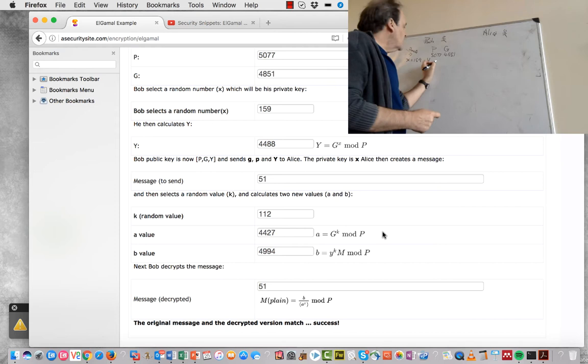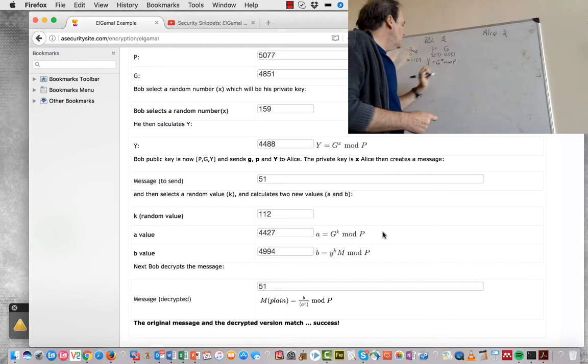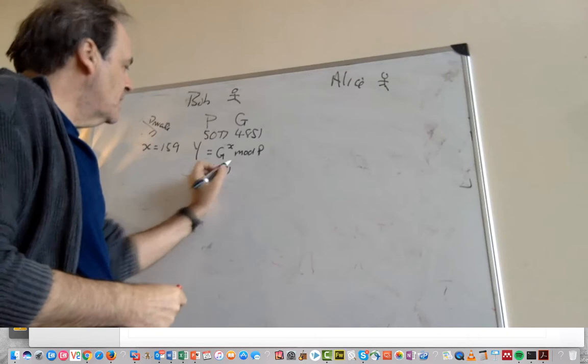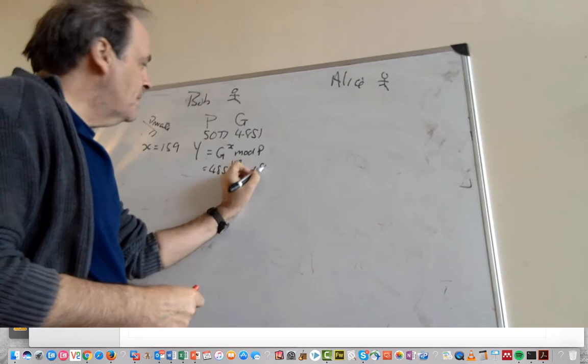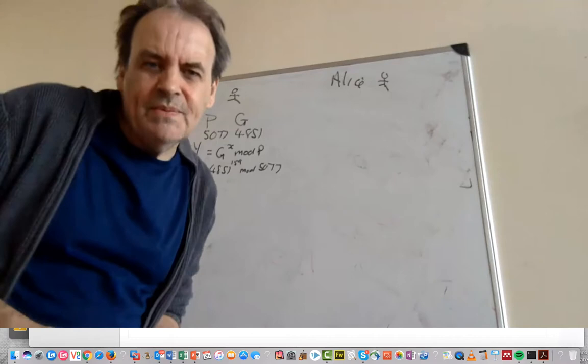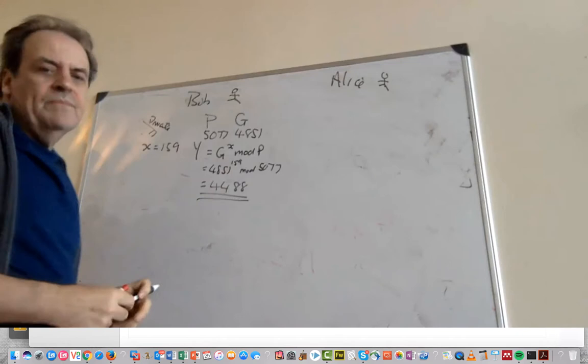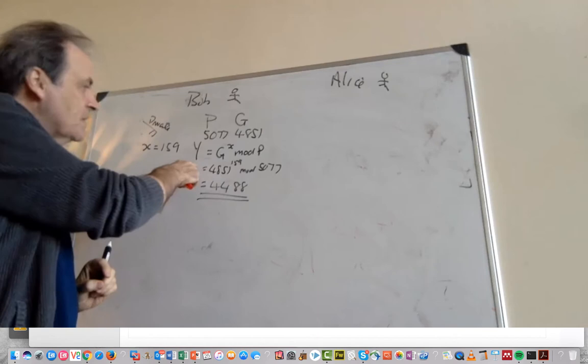The first thing we do is calculate G to the power of X mod P. So G is 4851 to the power of 159, and then we'll take the mod of our prime number there. So the value of Y in this case when we do the calculation is 4488. So that's generating the Y value.